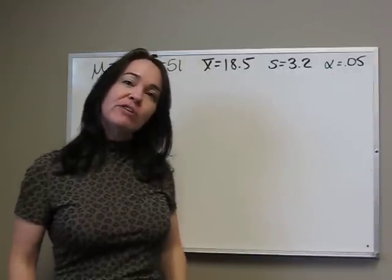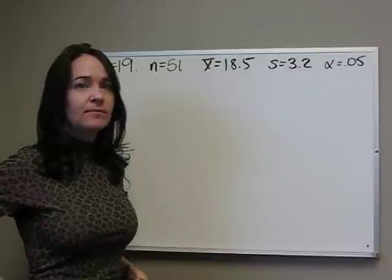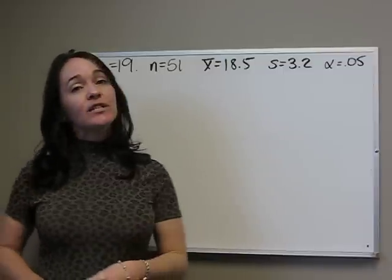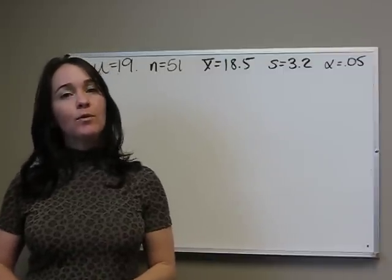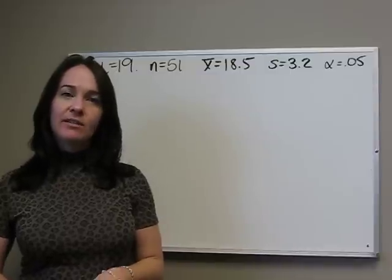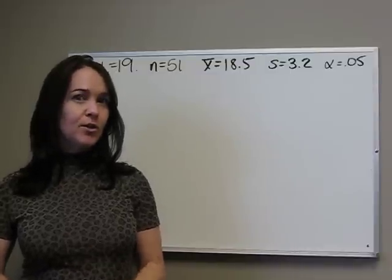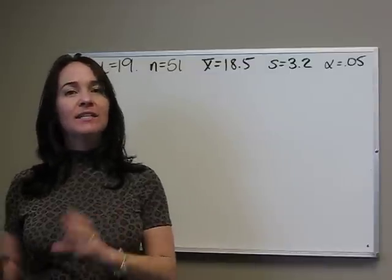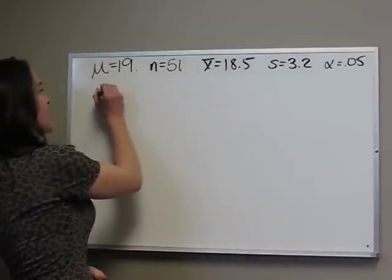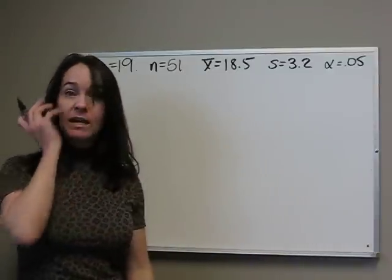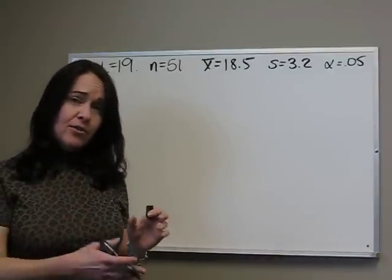whether the trout are actually less than 19 inches. Now, since we don't know sigma, what we're going to be doing is using a t-test. Just like our confidence intervals, if you don't know sigma, we use t. First step, first two steps are exactly the same as our other hypothesis test.